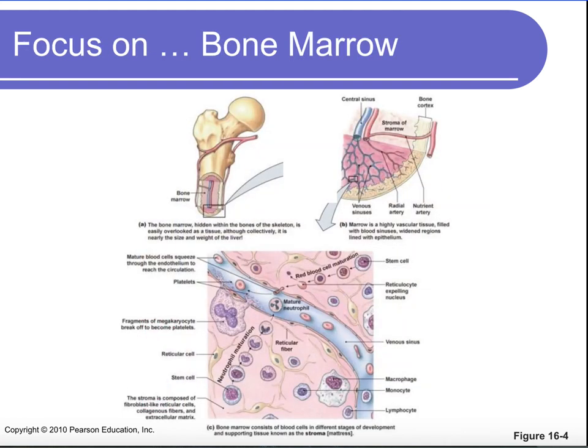Where do our blood cells actually come from? They are created, matured, and released from our bone marrow — that's true for most blood cells. The only exception would be T cells, which are born in the bone marrow but migrate to the thymus gland to mature. Every other blood cell is born and matures here in the bone marrow.